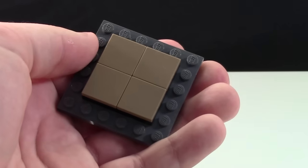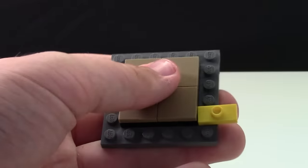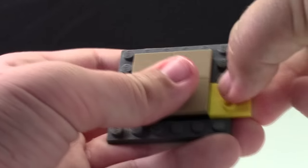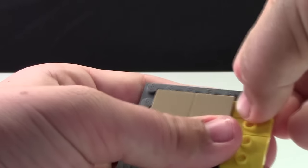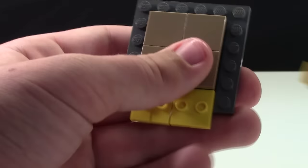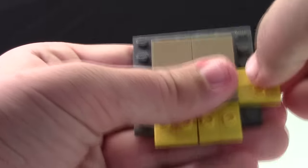Once your 4x4 plate is covered with tiles, take your 16 1x2 jumper plates and add them to the sides. Put four on each side, leaving one stud on the end of each one, and continue doing this along the entire piece.